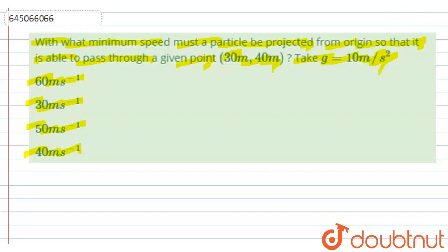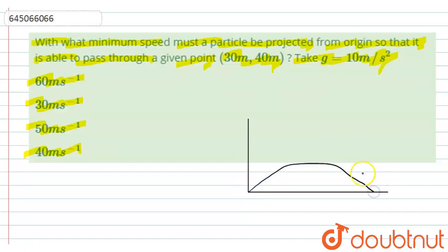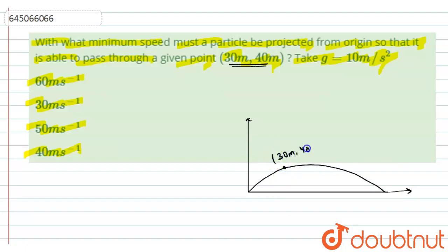Let me first draw the figure. We have projected a particle following projectile motion. In order for the particle to pass the point (30 m, 40 m), that point must lie on this path. So we have launched a projectile with some initial velocity u at angle θ. In order for the projectile to pass through this point, it must satisfy the trajectory equation.